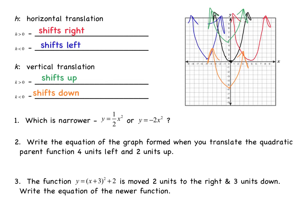Now let's look at some examples. Number 1: which is narrower, y equals one-half x squared or y equals negative 2x squared? Remember, the negative sign has nothing to do with how wide or narrow — it tells us whether the graph is reflected over the x-axis. So we compare the a values: one-half is between 0 and 1, and 2 is greater than 1. So y equals negative 2x squared would be the narrower graph.